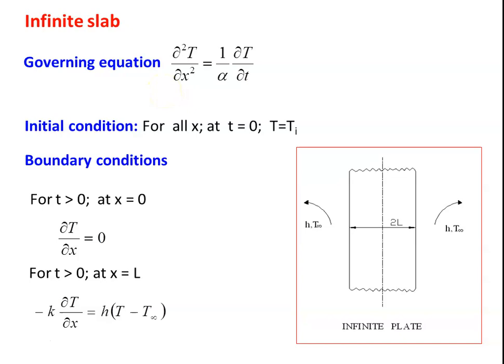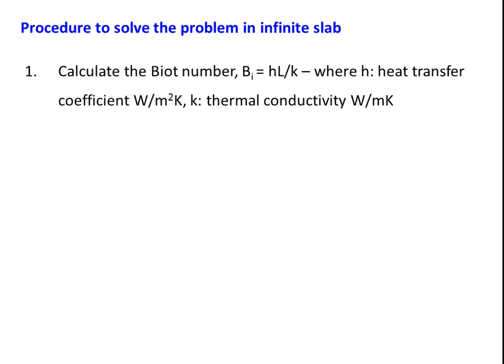For the one-dimensional unsteady state heat transfer problem, analytical solutions are available — refer to standard textbooks. At the undergraduate level, we solve problems using the chart: the Heisler and Grober chart. The procedure: first, calculate the Biot number: Bi = hL/k, where L is the half thickness of the slab, h is the heat transfer coefficient, and k is the thermal conductivity. Then calculate the dimensionless position x/L, where x is the distance measured from the center of the slab. Then calculate the Fourier number: Fo = αt/L².